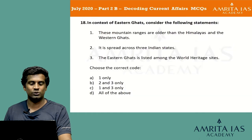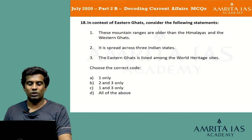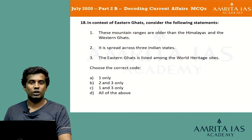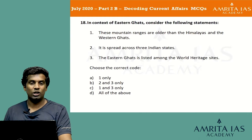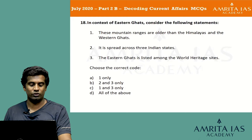In the context of the Eastern Ghats, consider the following statements: 1) These mountain ranges are older than the Himalayas and the Western Ghats. 2) It is spread across 3 Indian states. 3) The Eastern Ghats is listed among the World Heritage sites. Choose the correct code: option A 1 only, option B 2 and 3 only, option C 1 and 3 only, option D all of the above.